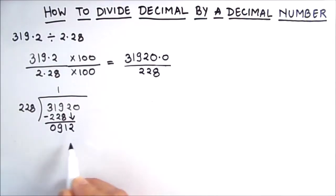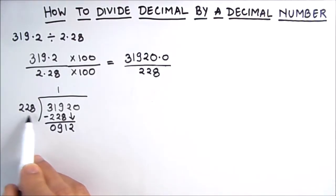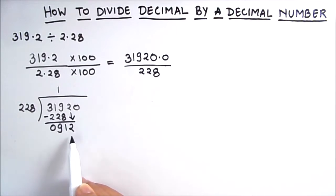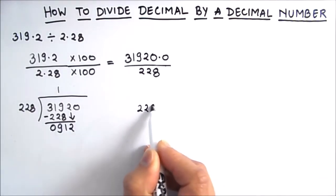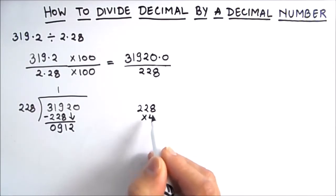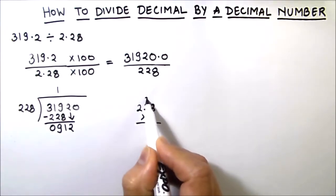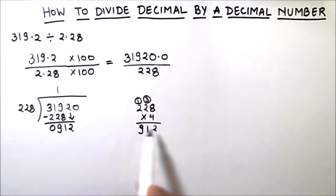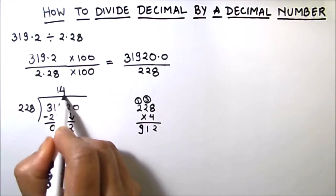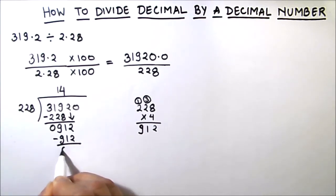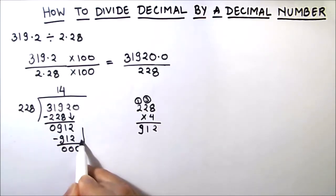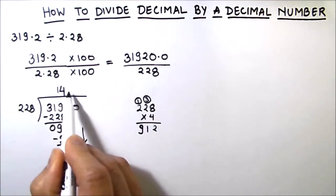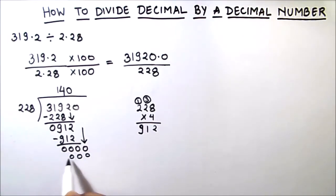Next, we drop down the next digit, which is 2, giving us 912. Since 228 times 4 is 912 — because 4×8=32, 4×2=8+3=11, and 4×2=8+1=9 — we get 912. Subtracting gives 0. We drop down the final 0, and 228 times 0 is 0, so the answer is 140.